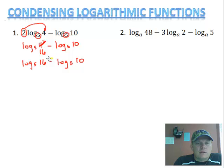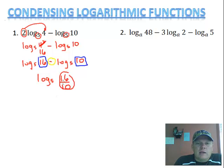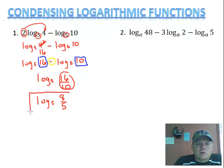Since I have subtraction, I'm going to write log base 5 and start condensing. The positive one — the first term — goes on top, and since it was subtraction, I'm going to do division, so that 10 is going to go down on the bottom. So 16 over 10 — let's go ahead and reduce it. Each of them can be divided by 2, so that makes log base 5 of 8 over 5. So there's our answer, our simplified condensed version for the first problem.